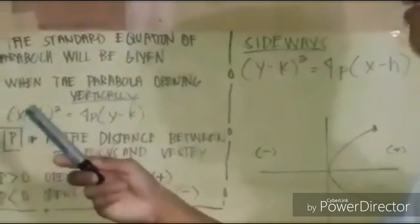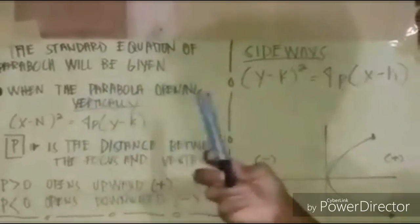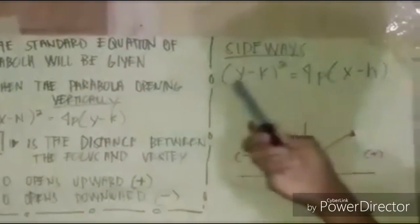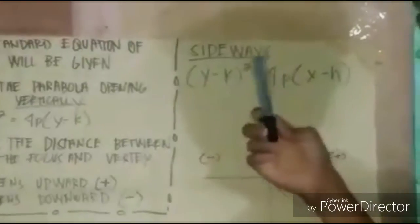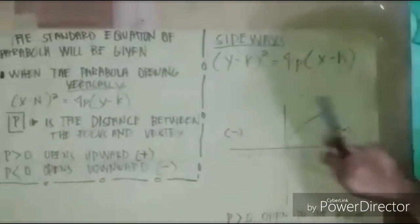From (x minus h) squared equals 4p(y minus k) is naging (y minus k) squared equals 4p(x minus h). Yun guys, kung mapapansin niyo.